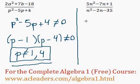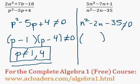What about over here? We know that n squared minus 2n minus 35 cannot be equal to 0. Same thing. We can factor this trinomial, which will make things simpler.